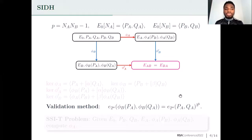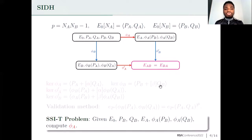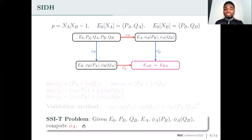So in SIDH, the underlying problem is not the pure isogeny problem, but it is a supersingular isogeny problem with torsion point information. You are given the starting curve E0, the end curve E_a, and the action of the secret isogeny on some torsion points, and you are asked to compute the secret isogeny. One other particularity of SIDH is that you also know the starting curve E0, which is always chosen to be the curve having j-invariant 1728 or a neighbor of this curve, and we know the endomorphism ring of this curve.